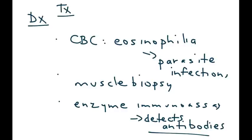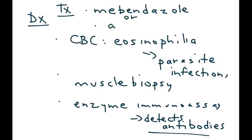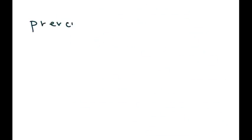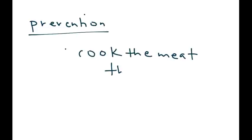Treatment of trichinosis involves medications that are designed specifically for parasitic infections. Mebendazole or albendazole are commonly used. One final important point to mention is prevention — the most important thing is to cook the meat thoroughly so that you can kill the larvae.